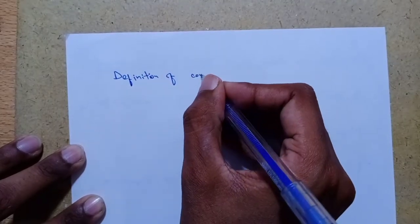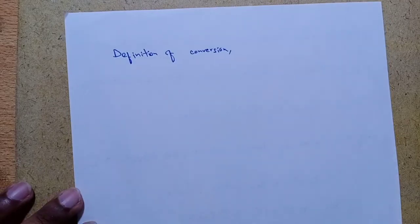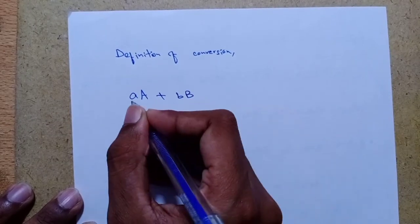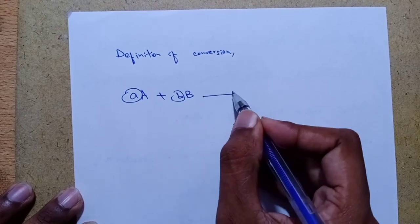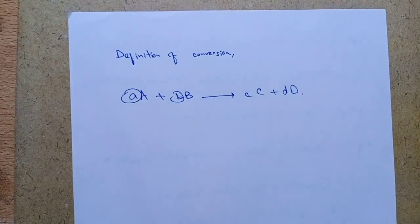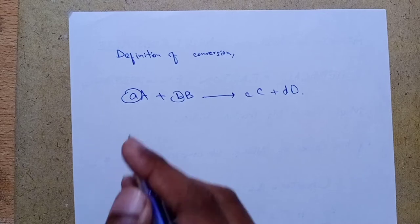In the definition of conversion, we choose one of the reactants as the basis of calculation and relate the other species involved in the reaction to that basis. The reaction is: aA + bB → cC + dD. In this reaction, it is best to choose the limiting reactant as the basis of calculation. We develop stoichiometric relations and design equations by considering this general equation.